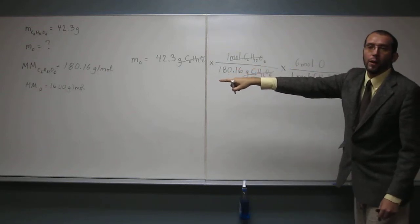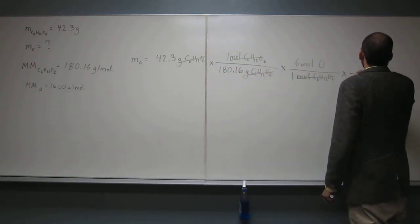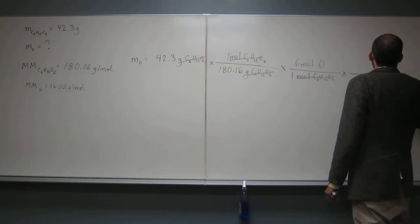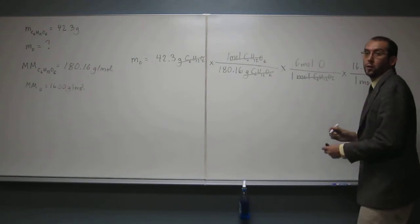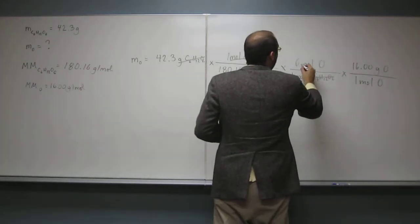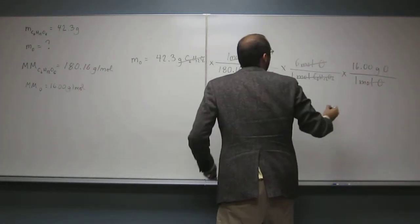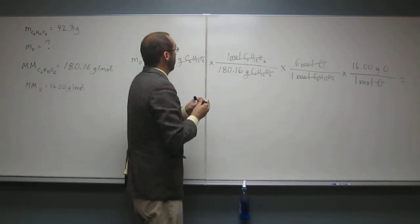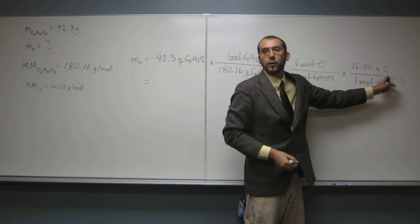And then, moles of oxygen, we've got grams of oxygen over there, so we'll just say, for every one mole of oxygen, it equals 16.00 grams of oxygen, like that. And that will cancel, and cancel like that. So, what does that equal? It should be, from what we canceled out, the grams of oxygen, okay?